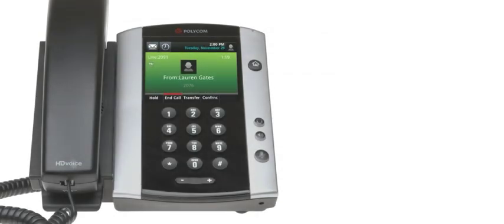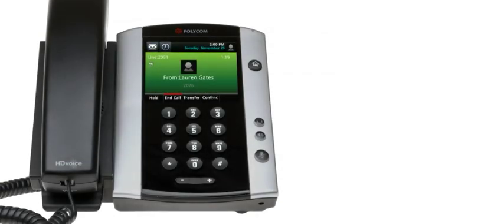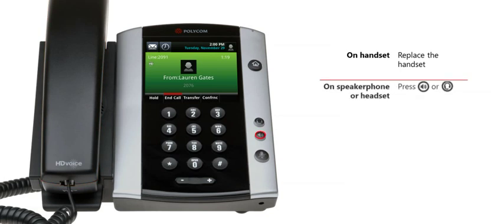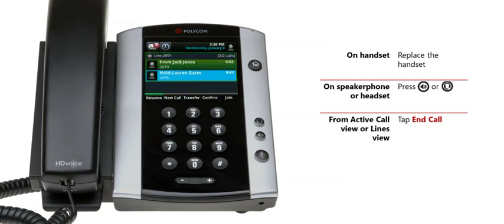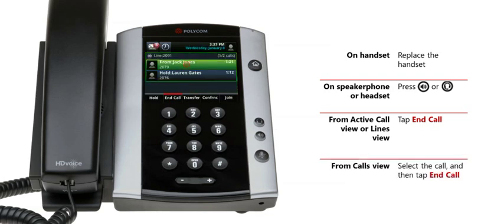To quickly end an active call, replace the handset, or press the speakerphone key or headset key. From active call view or lines view, tap end call. From calls view, select the call if it's not already selected, and then tap end call. If you need to end a call that is on hold, first select the call, tap resume, and then tap end call.